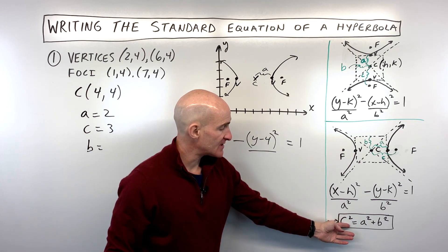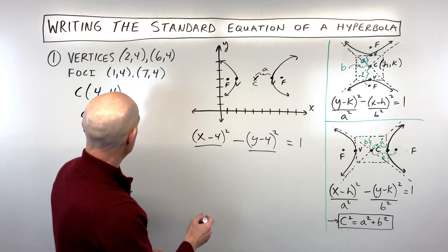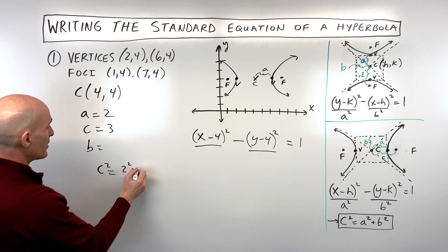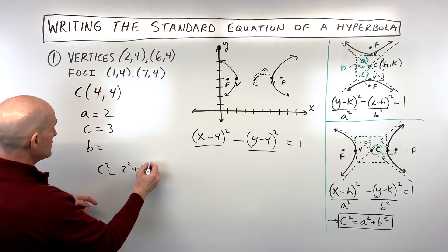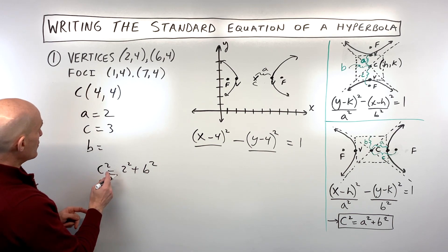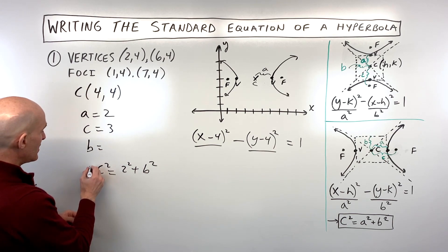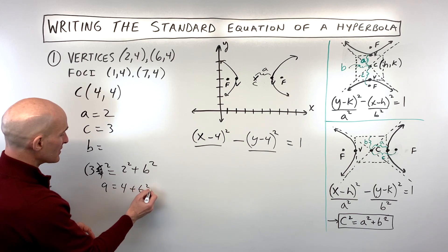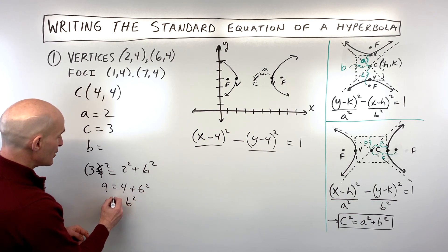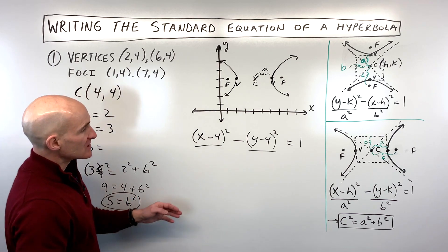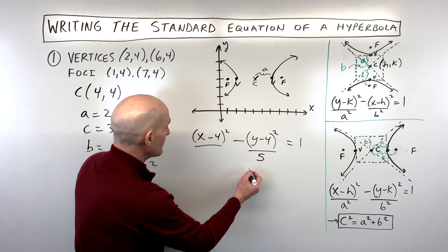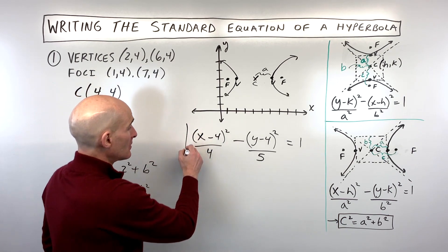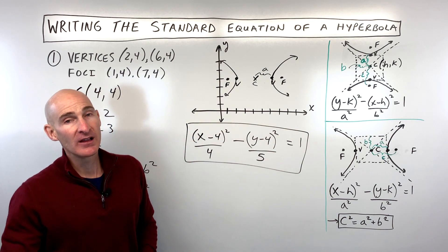For hyperbolas, the formula you want to memorize is c² = a² + b². So: 3² = 2² + b², giving us 9 = 4 + b², and subtracting 4 from both sides gives b² = 5. In our equation, a² = 4 and b² = 5, and we have the standard form of the equation of the hyperbola.